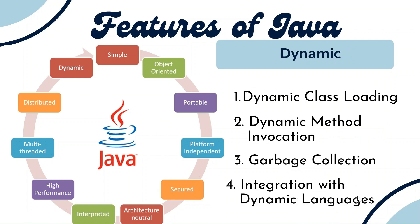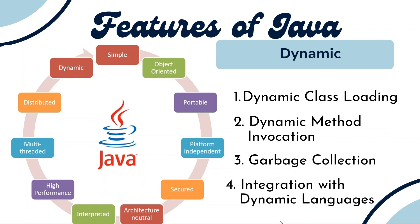For dynamic features, you identify what types of classes you want and go for loading those particular classes for execution. Similarly, at runtime we can call methods as well, which is called dynamic invocation. The garbage collection mechanism decides which objects are not in use and drops those particular objects at runtime. Java can also be integrated with other languages like C and C++ to develop applications.